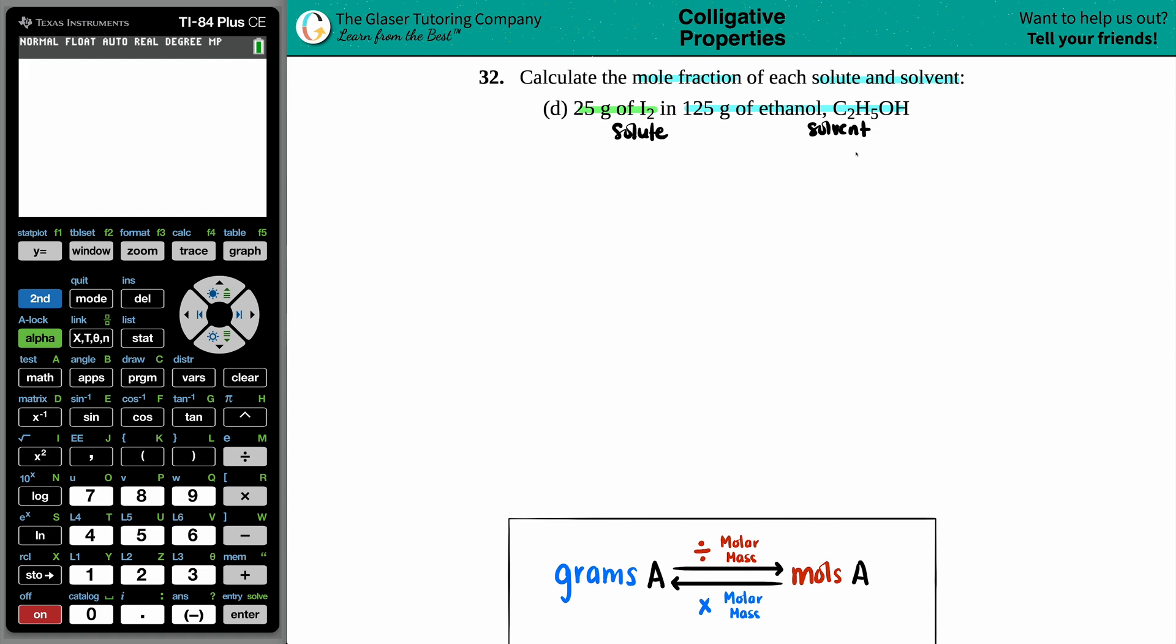So we just have to find the mole fraction, which is this formula right here. A mole fraction is basically just any other fraction. A fraction is always a part divided by a whole. Now this X is the general unit or variable for a mole fraction. So if you're solving for a mole fraction, you're solving for X.